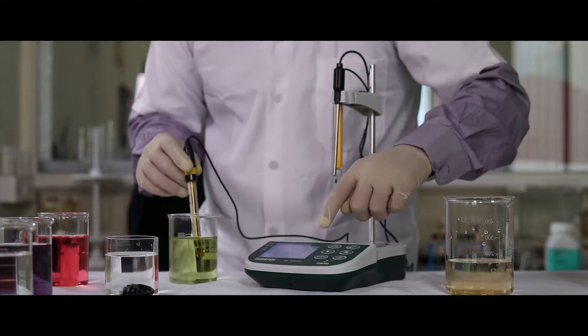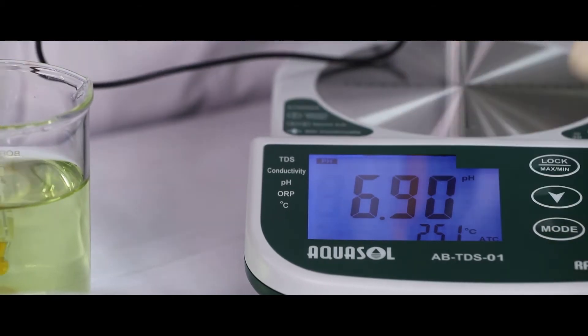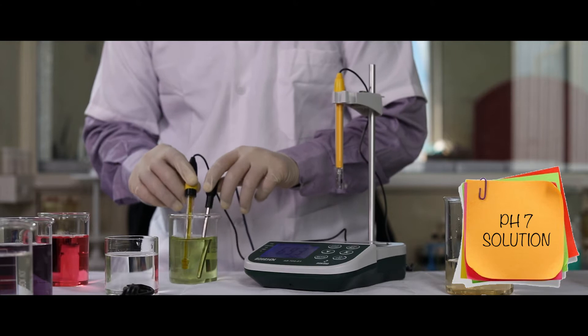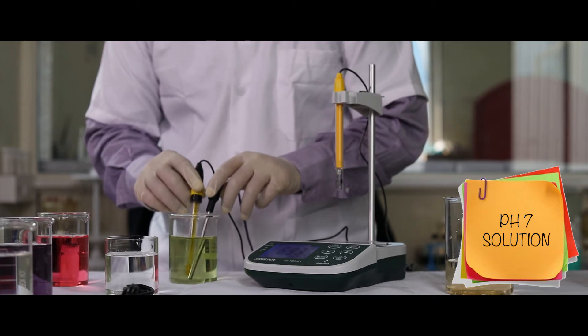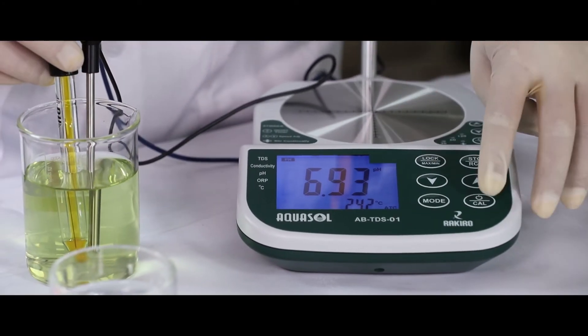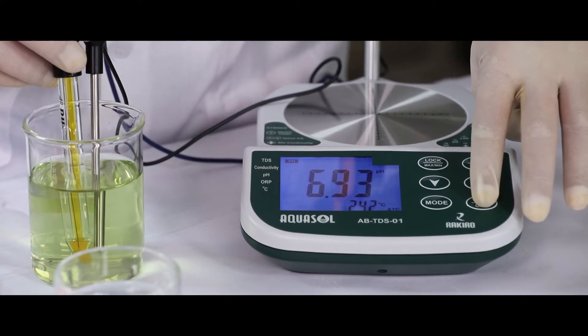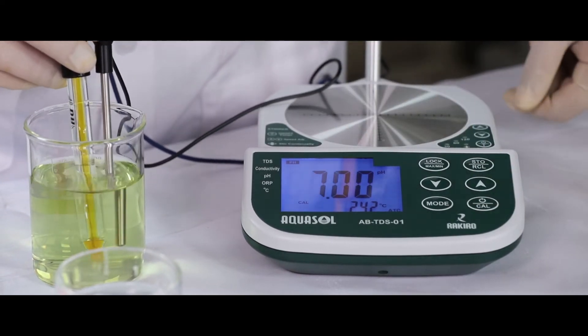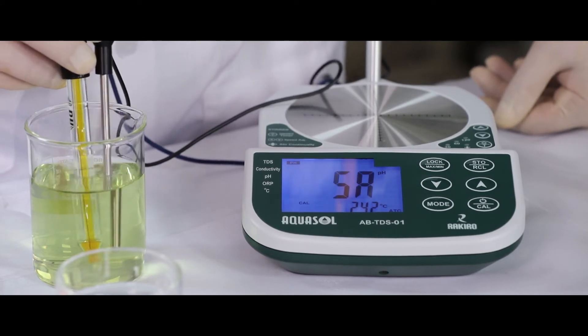Calibration points for PH solution are 1.68, 4, 7, 10, and 12.46. Press the mode button for PH setting and place the PH electrode and temperature probe into the standard PH solution. Once the reading stabilizes, press the Cal key till the meter displays SA and END.